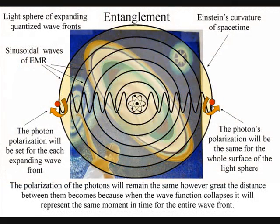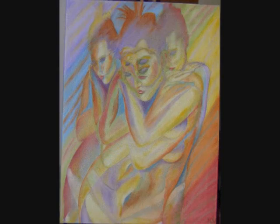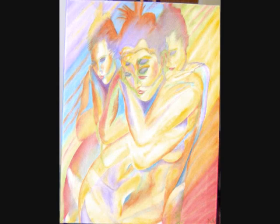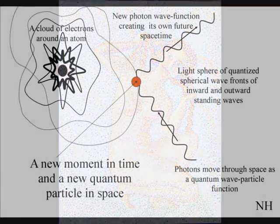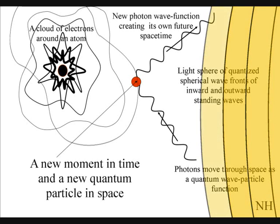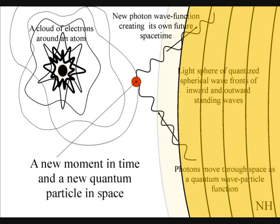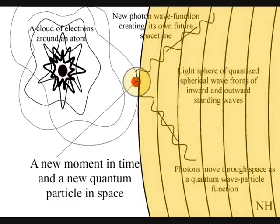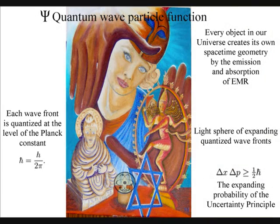Because it is impossible to achieve absolute zero, all atoms radiate electromagnetic radiation continuously, even the atoms of an observer. The atoms bond together and then create their own spacetime geometry and symmetry in unison. Each atom will radiate out light spheres of quantized wavefronts. Each wavefront will create a probability of a future event. When a wavefront comes in contact with the electrons on the surface of another atom, it will create a new moment in time and space in the form of a photon-electron coupling.